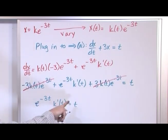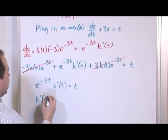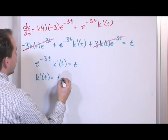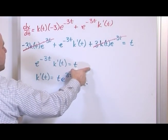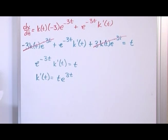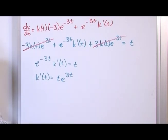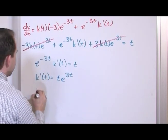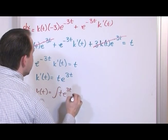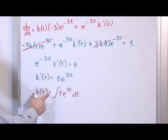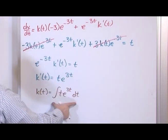We're trying to solve for k, so let's manipulate this. k′(t) equals t times e^(3t) — we move the e^(−3t) to the other side, which flips the sign in the exponent. So k(t) equals the integral of t·e^(3t) dt. We do the integral on the left and get back k, which is what we want. Now, how do you solve that integral?